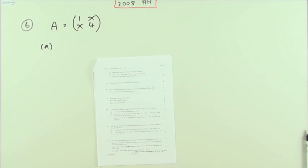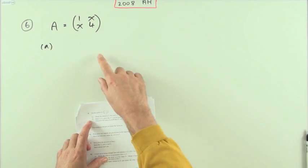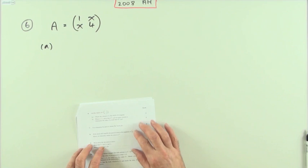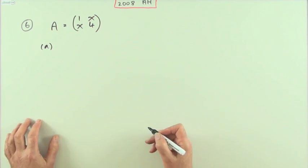Number six from the 2008 Advanced Higher, five marks for a little matrix question. Sometimes these little matrix questions might appear scary because you're just not used to them, but they actually involve just very simple arithmetic. Part A asks for the values of x for which A is singular. Singular means it doesn't have an inverse.